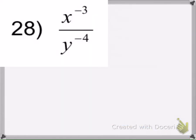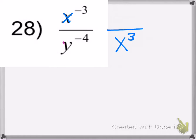Last one. The bases are not the same, so I can't subtract the exponents. Since the x has a negative exponent, it's going to move to the denominator. And since the y has a negative exponent and it's already in the denominator, it's going to move to the numerator. That will be the final answer.